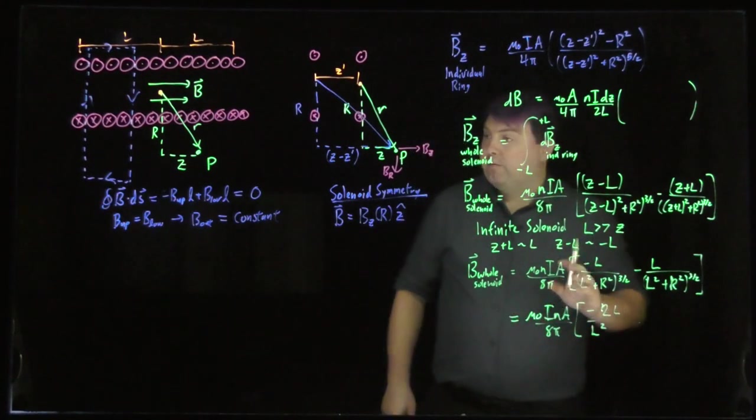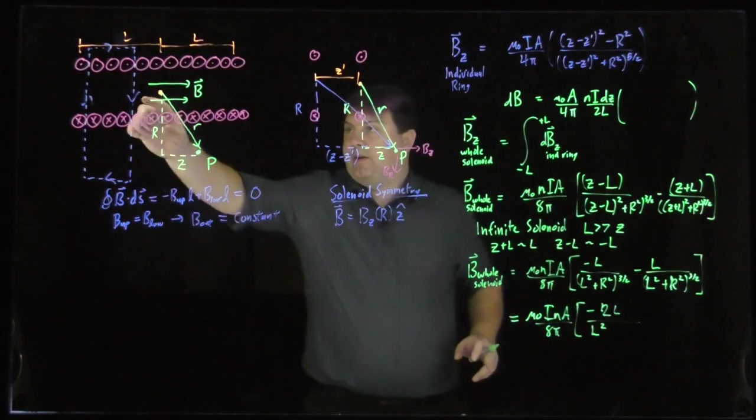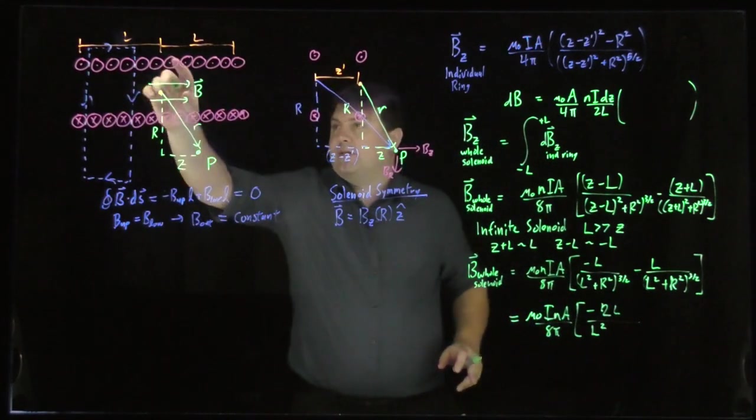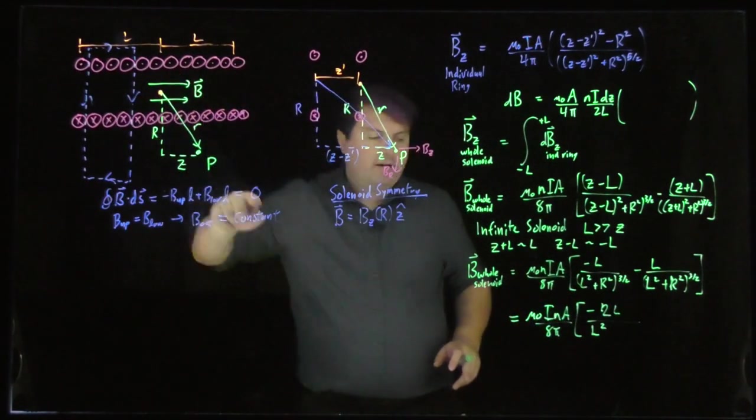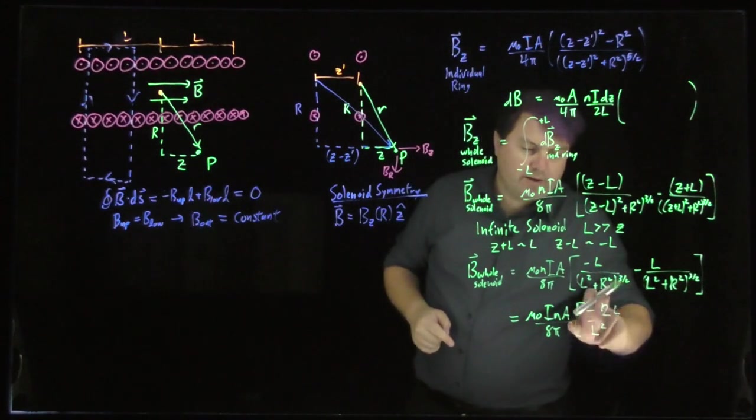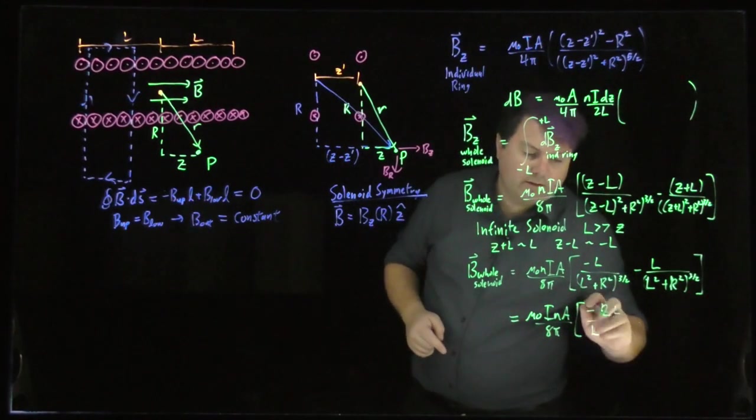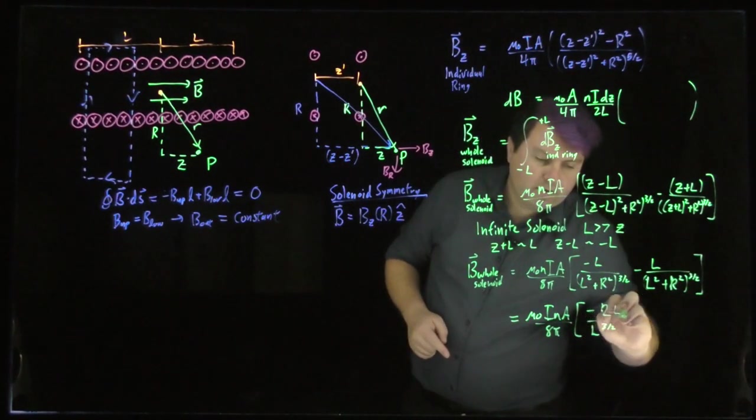But let's look at this then. So we have mu naught INA over 8 pi negative 2L over L squared. Now, one last trick. If L is actually infinite, then this distance is also going to be much, much larger than R. So this is just going to be L squared to the 3 halves or L to the 3 halves.